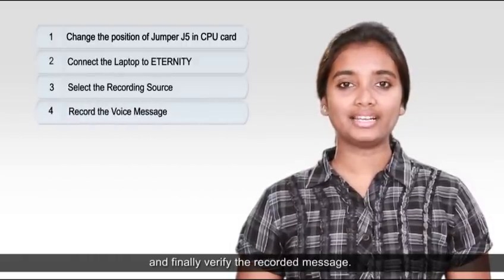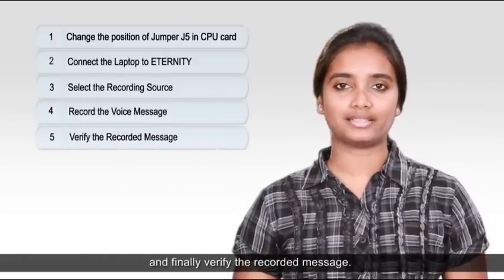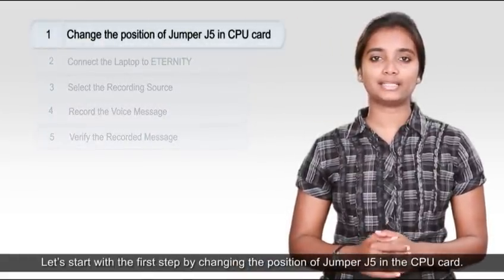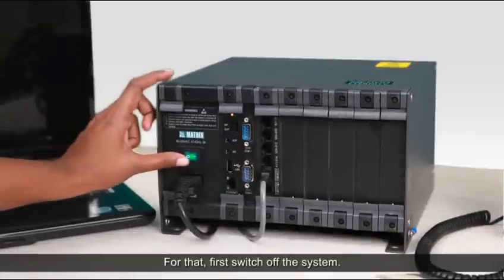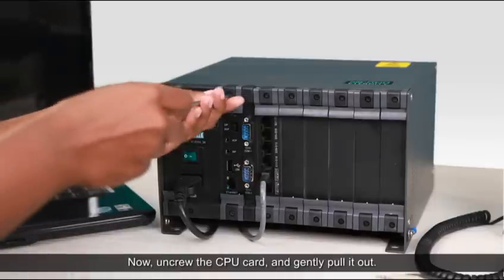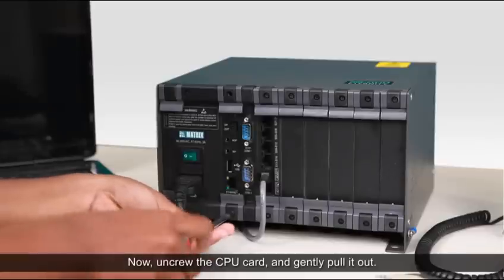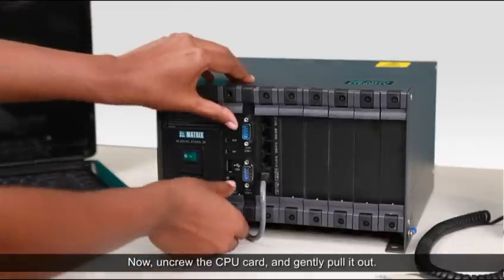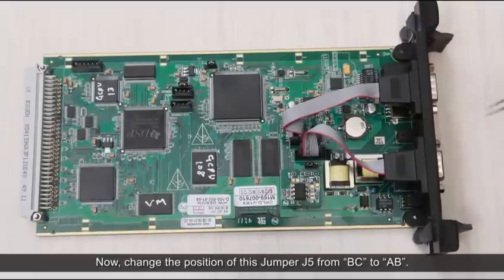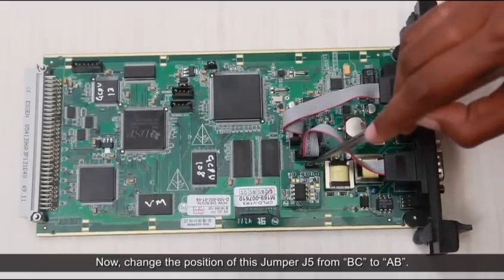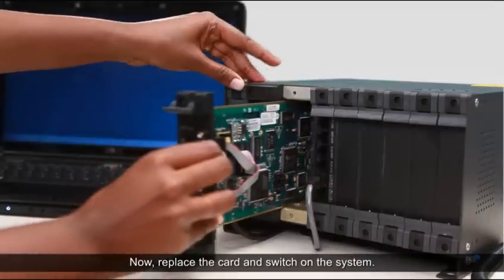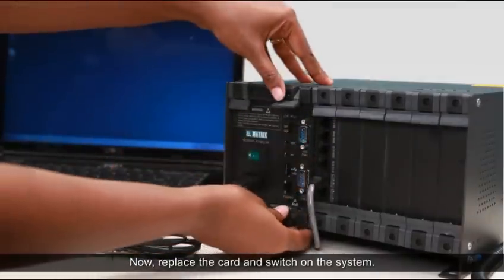Let's start with the first step by changing the position of jumper J5 in the CPU card. For that, first switch off the system. Now unscrew the CPU card and gently pull it out. Now change the position of this jumper J5 from BC to AB. Now replace the card and switch on the system.